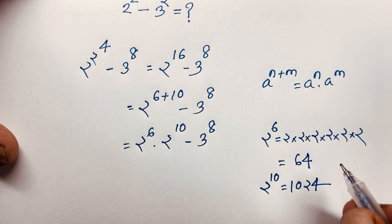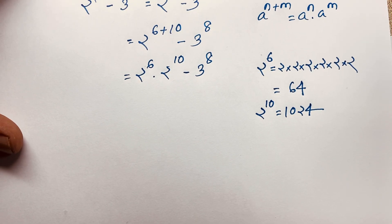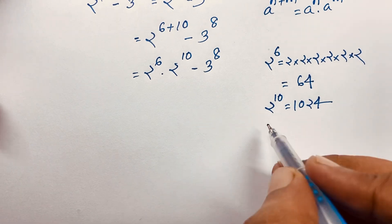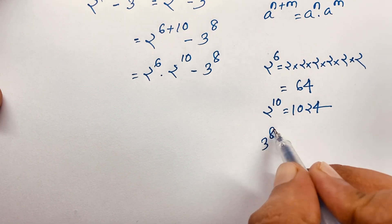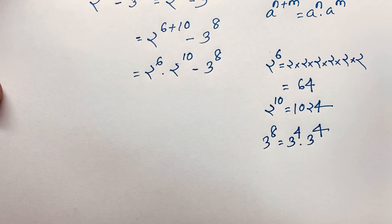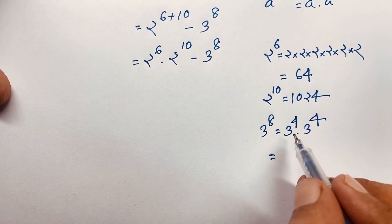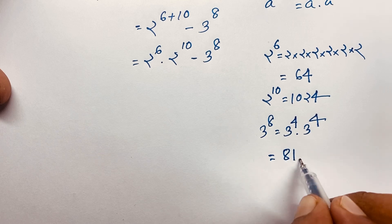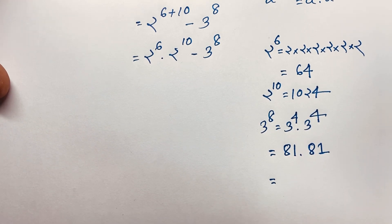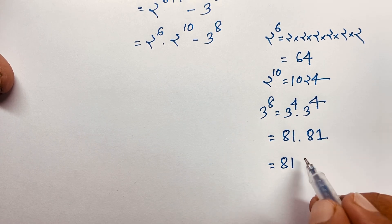Now, 3 to the power 8 is equal to what? I can see 3 to the power 8 will be 3 to the power 4 times 3 to the power 4. Now, 3 to the power 4 equals 81, so we have 81 times 81.